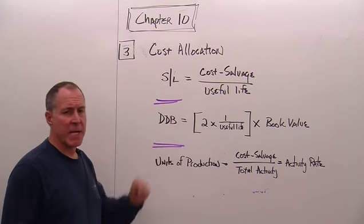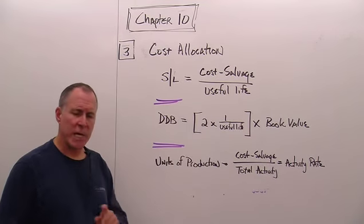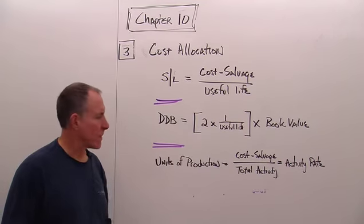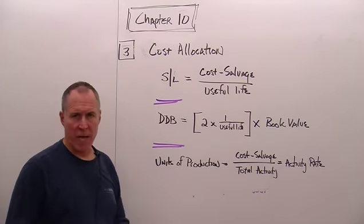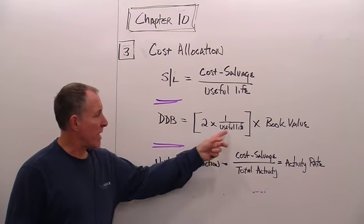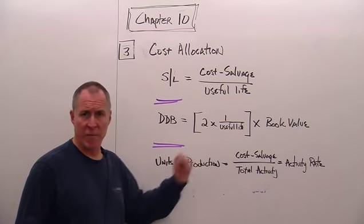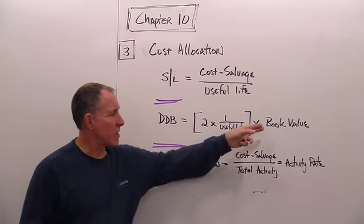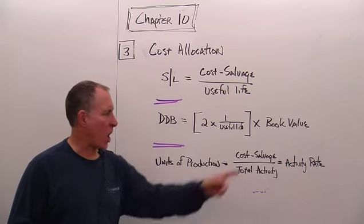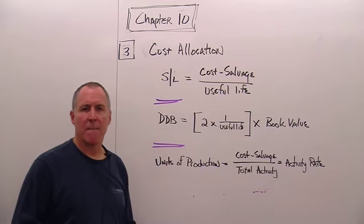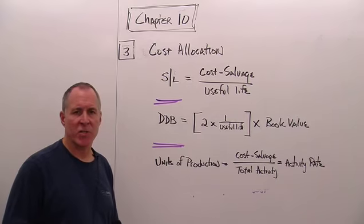The second method is DDB, which stands for Double Declining Balance. It's a two-part calculation. You take two times one over the useful life — in our case, one-fifth — so two times one-fifth is two-fifths. Then you multiply that times the book value, which is the cost of the asset minus the accumulated depreciation to date.